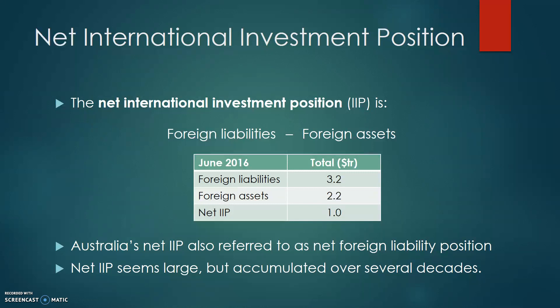Australia's net IIP can also be referred to as a net foreign liability position because the amount of foreign liabilities exceeds the amount of foreign assets. So Australia's net foreign liability position is $1 trillion. As we know, Australia has recorded many current account deficits over the past decades, and this has accumulated into a large net foreign liability position through repeated years of foreign investment inflows.